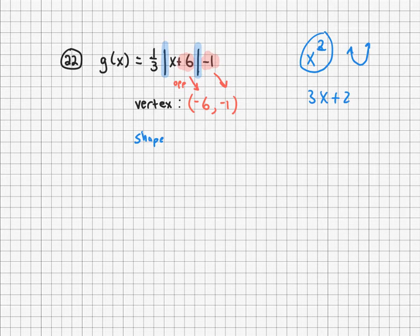Or if I just had this 3x plus 2. Well, this right here, just the x by itself, or more specifically, x to the power of 1, tells me that I'm going to have a line. So there's something important about each of these functions that tell me the shape, right? And so in this case, because I have the bars, it's an absolute value. So therefore, I know the shape is a V shape.